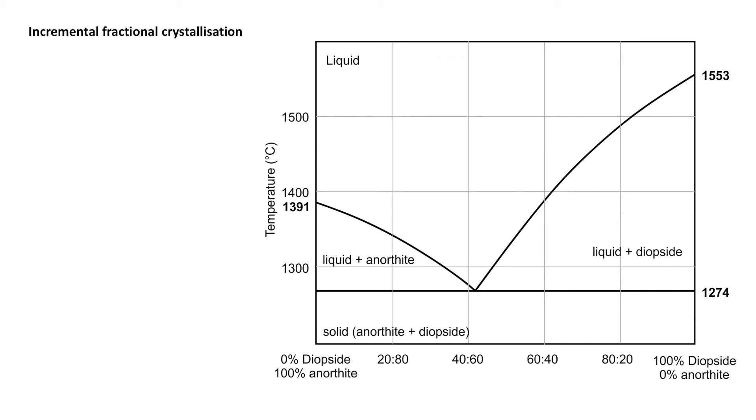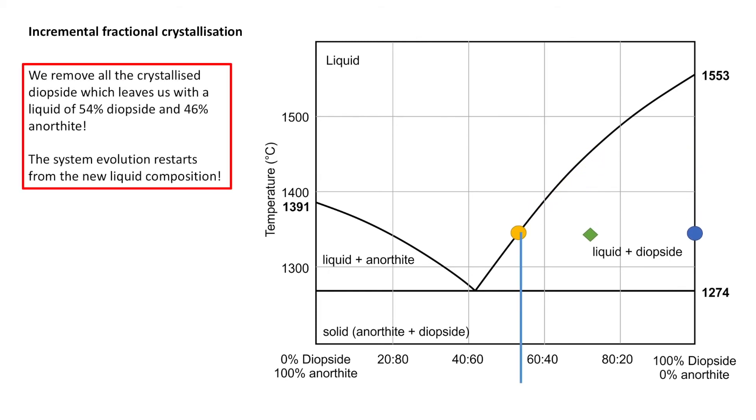So incremental fractional crystallization, we talked previously about incremental and pure fractional crystallization. So envisage a system of this composition. We're going to cool it. It's going to hit the liquidus. We're going to crystallize our first diopside and have our liquid as well. They're going to continue to evolve down the system. We can apply our lever principle there again if we want. But what I'd like to highlight is this is the point where we're going to remove all that crystallized diopside.